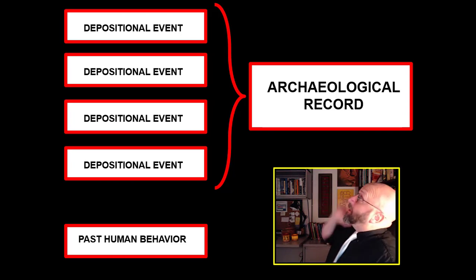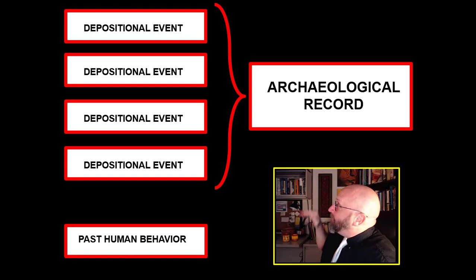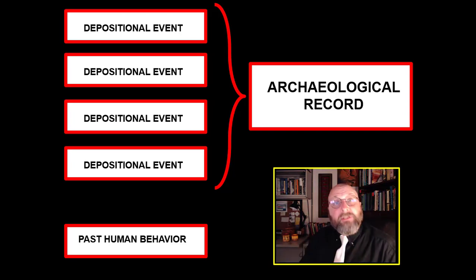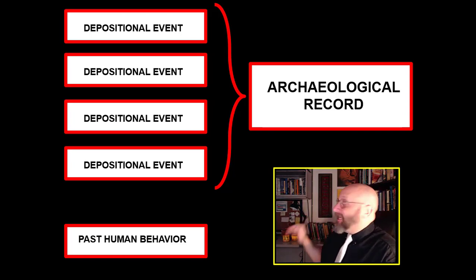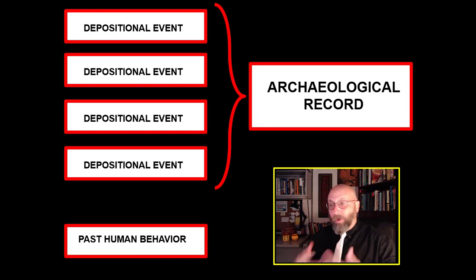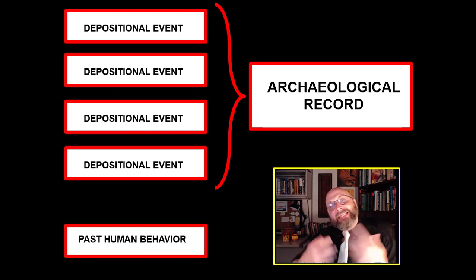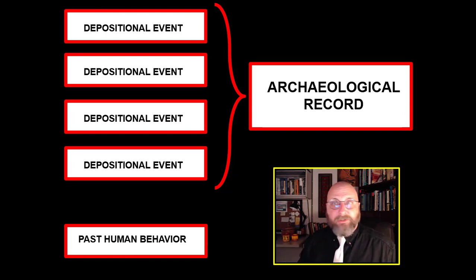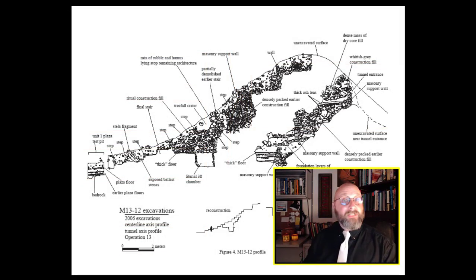In order to study the past, you have to piece together what happened in each of these depositional events — what happened to build the archaeological record. Once you have this sequence of depositional events, you can get at past human behavior: what ancient people did in antiquity. That will answer your research question, whether it's who built the pyramids, how the Karankawa adapted to coastal Texas, what happened in Pompeii, or what happened in the littlest pyramid you've ever seen.